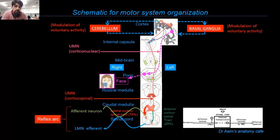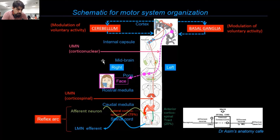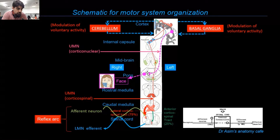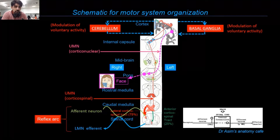As part of the descending upper motor neuron pathways, we'll discuss the corticospinal tract in detail — shown here in red dotted lines — extending from the cerebral cortex down to the anterior horn cells of the spinal cord. We'll also cover the corticonuclear pathways, shown in pink dotted lines, which extend from the cerebral cortex to the motor cranial nerve nuclei. These corticonuclear tracts are upper motor neuron pathways situated inside the central nervous system, influencing reflex arcs at higher levels such as in the brainstem.